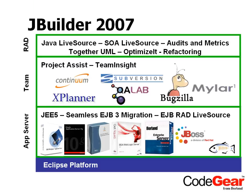It's a very powerful lifecycle solution to help your team work better and faster together. And of course, it wouldn't be JBuilder without RAD capabilities. We've brought Java LiveSource forward, added SOA LiveSource for visual web services development, audits and metrics, the best profiling and optimization tools, and all of our refactoring capabilities — all the rapid application development features you'd expect in JBuilder.